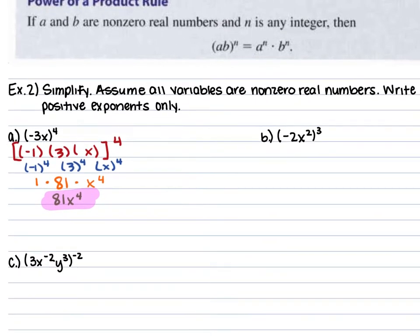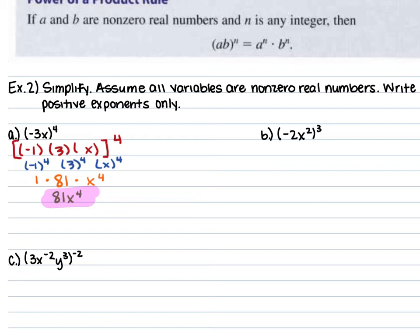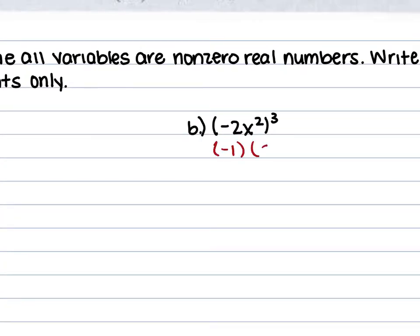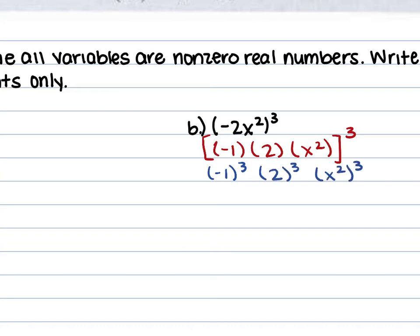For example 2b, we have negative 2x squared all raised to the 3rd power. That negative 2x squared is inside those parentheses, so we separate it into negative 1 times 2 times x squared in brackets, all raised to the 3rd power. So that's negative 1 to the 3rd power, 2 to the 3rd power, and x squared to the 3rd power. Negative 1 times negative 1 times negative 1 gives us negative 1. 2 times 2 times 2 is 8. x squared raised to the 3rd power — we have a power raised to a power, so we multiply: that gives us x to the 6th power. Negative 1 times 8 is negative 8, giving us a final answer of negative 8x to the 6th power.